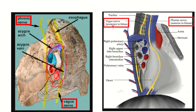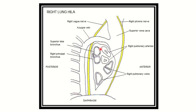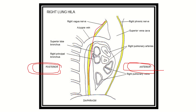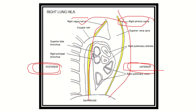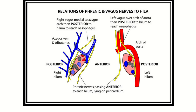In this picture also we can see the vagus nerve posteriorly and the phrenic nerve anteriorly. In yet another picture, we again confirm: anteriorly the phrenic nerve, and posteriorly the vagus nerve.